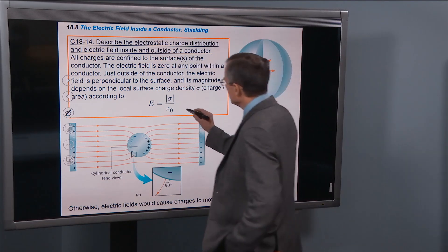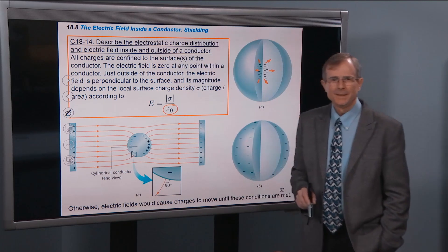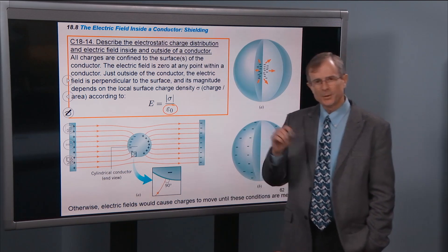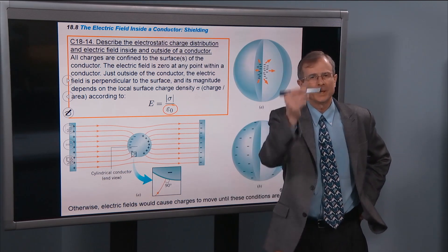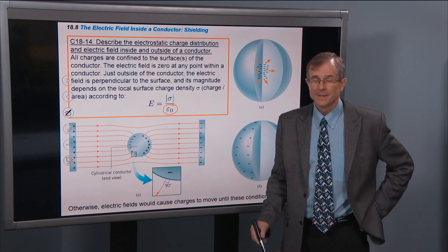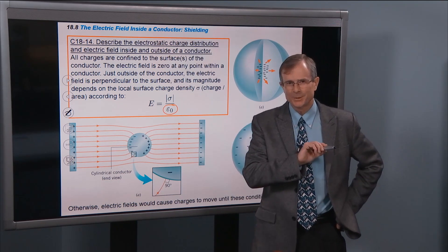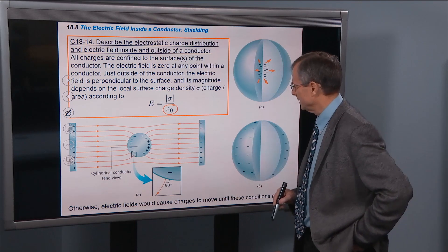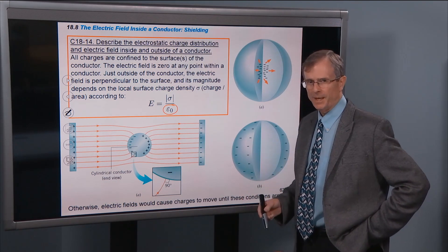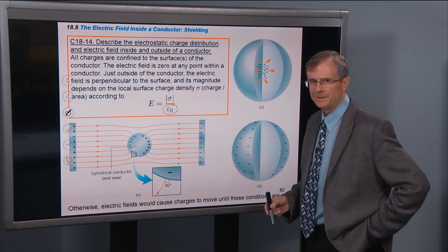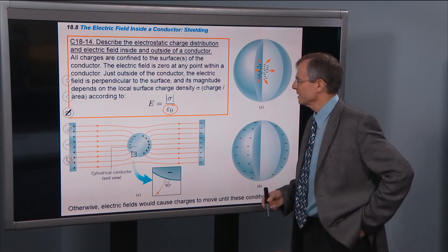The first thing you might notice is that ε₀, from an earlier concept, is called the electric permittivity. And that's equal to 1 over 4πk — 1 over 4π times the Coulomb force constant.